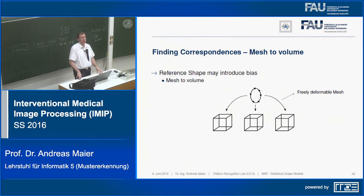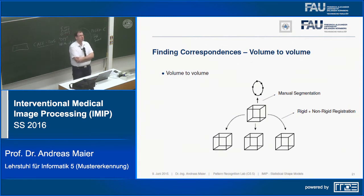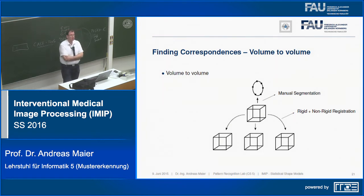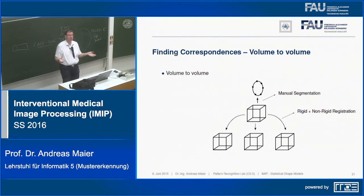Registration gives us correspondence of the landmarks. Now we need to think about how the shape is represented in the image — the appearance model. A simple approach: we expect an edge at the boundary. For each mesh vertex, follow the direction perpendicular to the mesh normal and detect the point with the steepest intensity step — that would be a boundary. More sophisticated methods include feature extraction using SIFT descriptors, Gabor wavelets, or distance features.